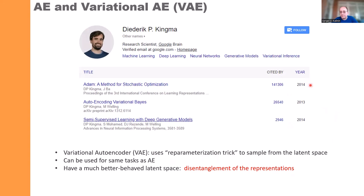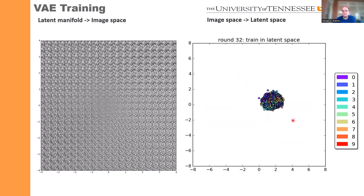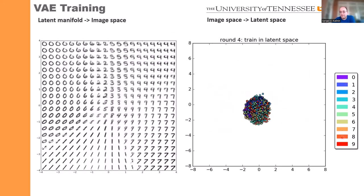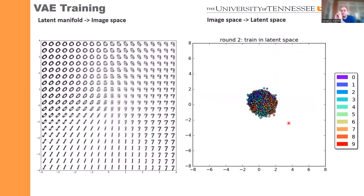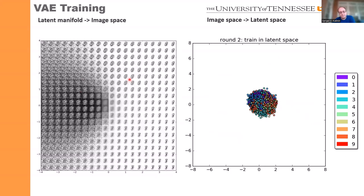Interestingly, variational autoencoders were invented in 2014 — less than 10 years ago. The way we train a VAE is similar to a standard autoencoder. Using the MNIST dataset as an example, you can see how the latent distribution evolves during training: initially all digits are jumbled together, then they start to separate, and the autoencoder learns how to reconstruct the digits progressively.